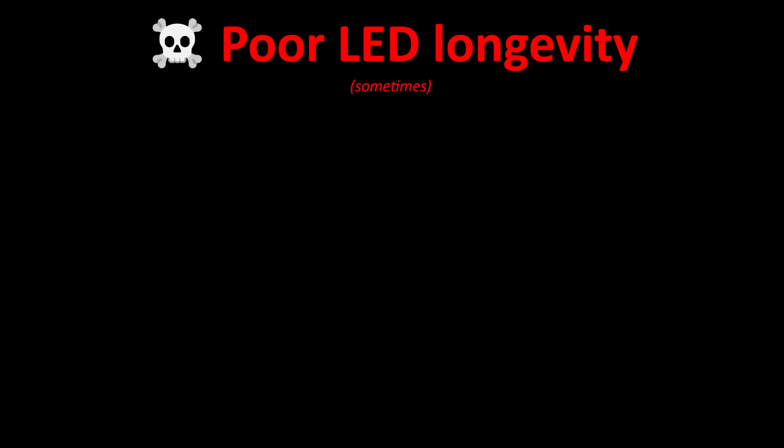Time to discuss why LEDs don't last as long as the package claims. Every LED bulb says something like, rated for 25,000 hours. That's about 20 years of normal household use. But then you install it, and it dies in two years. What gives?